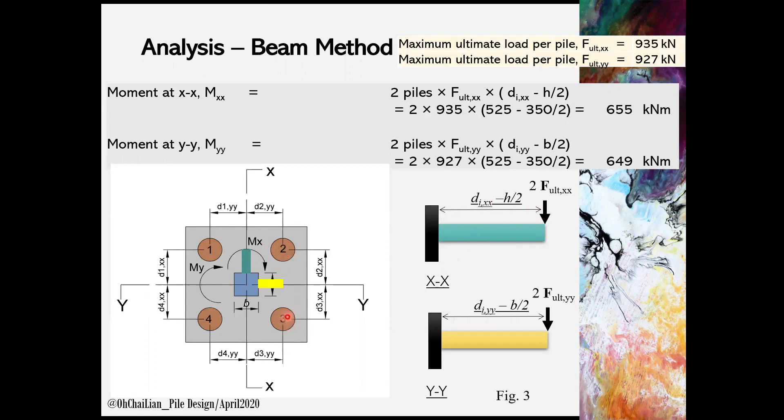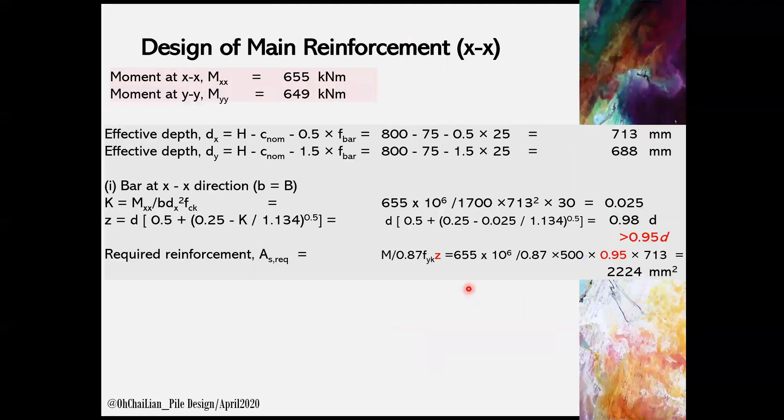Once we have obtained the moment at X and Y directions, we can design the main reinforcements for these directions. We can first determine the effective depth for the bars in X and Y directions. It is noted that the bars in Y direction is placed above X direction.